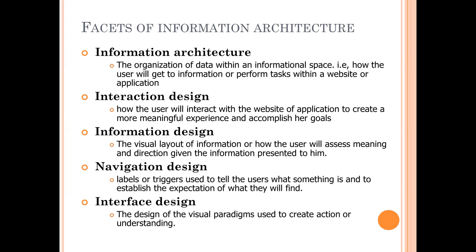The first phase, information architecture, is nothing but organizing the data within the information space — that is, how you are going to get the information about each and every task and how you are going to perform that particular task within the application. Whatever may be the application, the main idea is organizing the data and performing some functions. This is what information architecture is about.